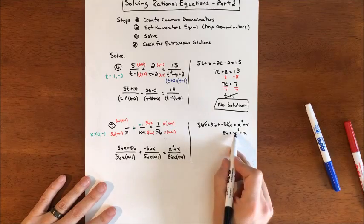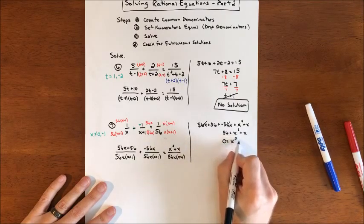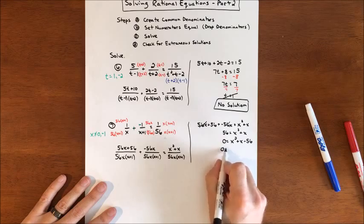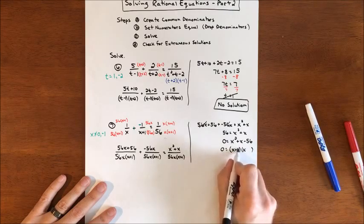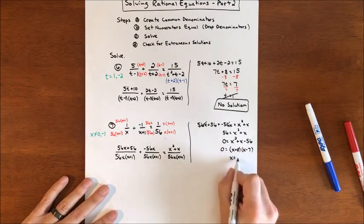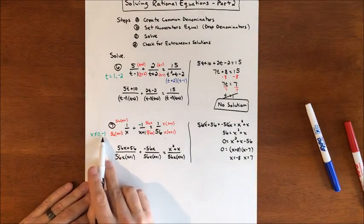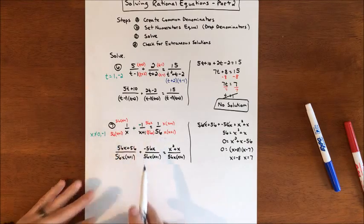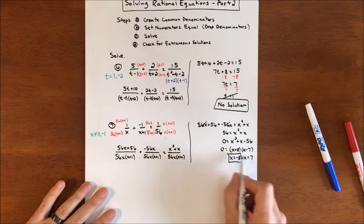We have a quadratic, which means we need everything over to one side. We'll bring the 56 over, making it equal zero: x squared plus x minus 56 equals zero. Let's see if this is factorable — anything that multiplies to negative 56 that adds to 1 would be positive 8 and negative 7. Those factors give us solutions of x equals negative 8 and x equals positive 7. Our exclusions were 0 and negative 1, so both solutions should work. Those are our two solutions.